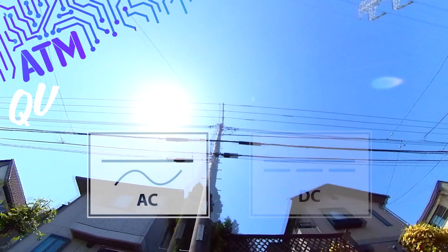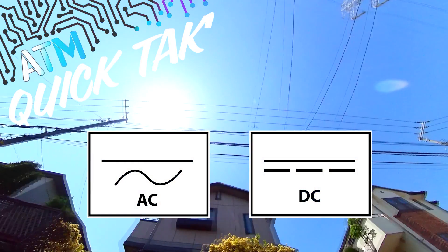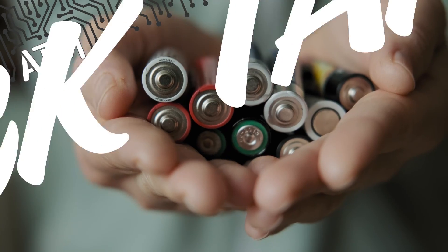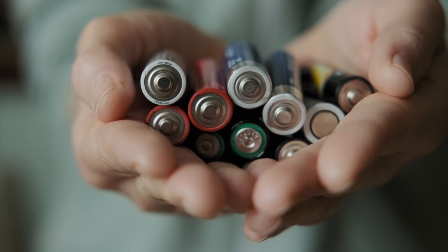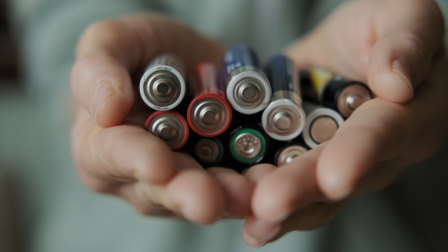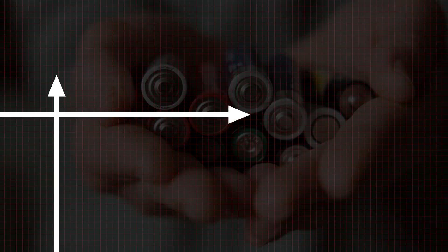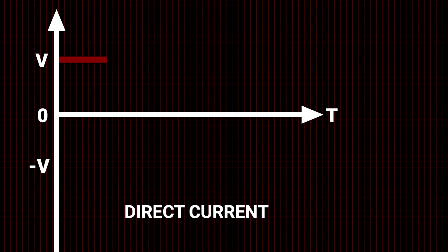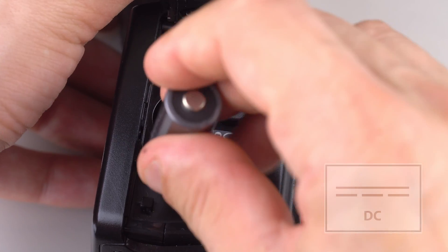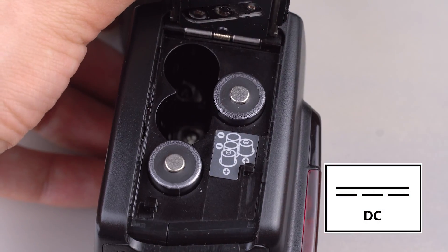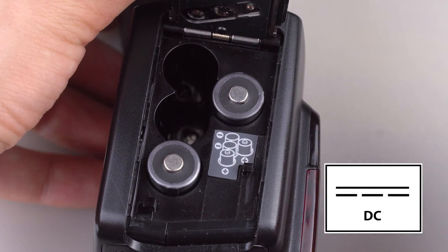Knowing the difference between AC and DC power is essential, at least enough to understand what powers your devices. DC, or direct current, flows in only one direction and provides a constant current or voltage. Most general consumer electronics use DC as their power source.